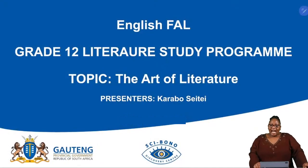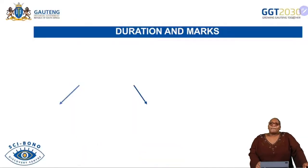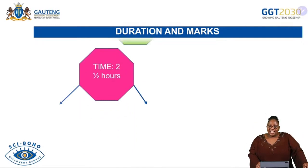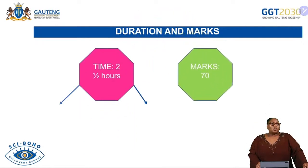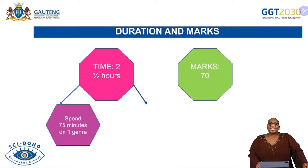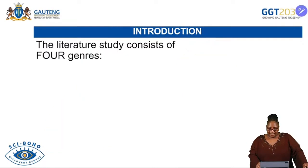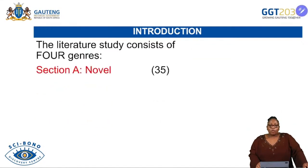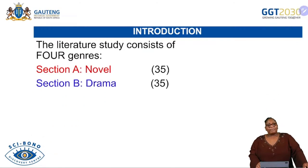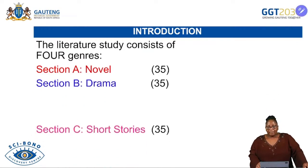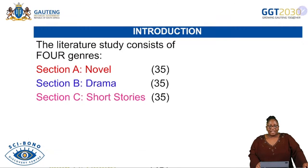Our topic today is the art of literature. Remember, learners, when you get to class and study literature, what is at stake is 70 marks, two and a half hours, and every paper is 75 minutes. In our literature study we have four genres: Section A, Novel for 35 marks; Section B, Drama for 35 marks; Section C, Short Stories for 35 marks; and Poetry for 35 marks.